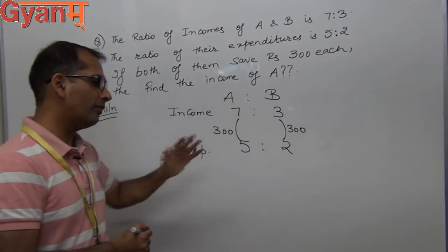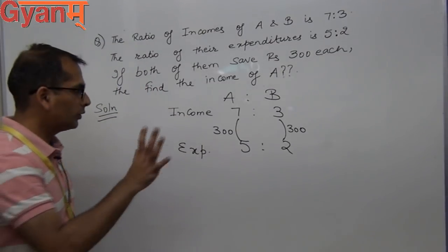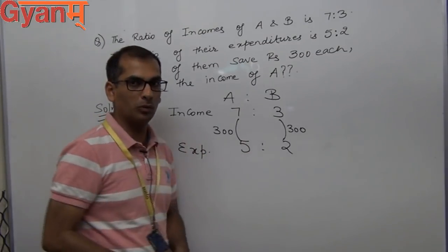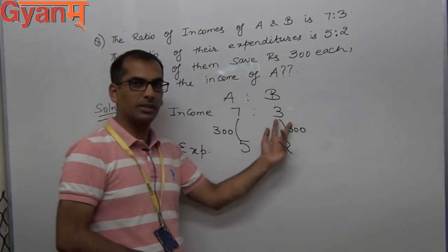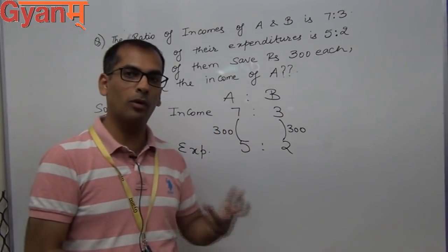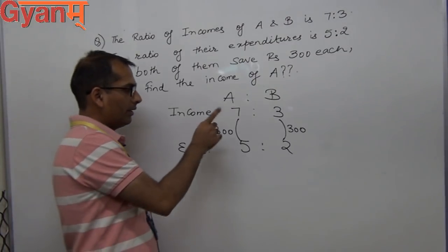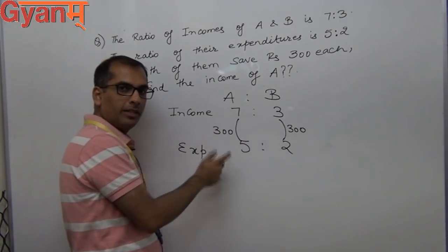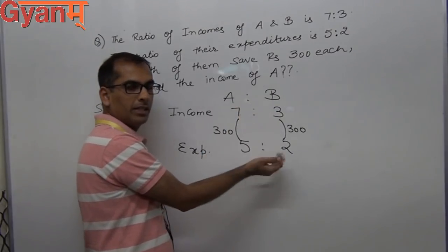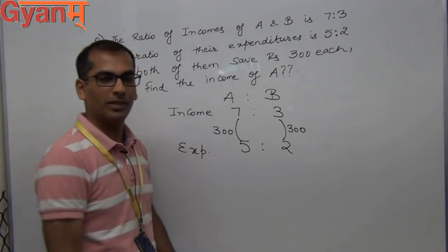The ratio of incomes is 7:3 and the ratio of expenditures is 5:2. These are not actual incomes; 7 is not the actual income, it is a representative in the form of a ratio. The difference between income and expenditure is known as saving.